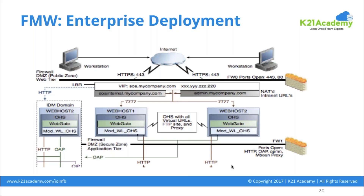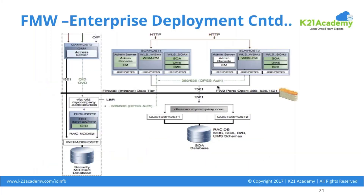You put a firewall in between and then you only allow HTTP ports, Oracle Access Protocol port, OPMN port, or MBean (management bean proxy) port. Then you have the middle tier — the application tier — which has host one, host two, SOA host one, SOA host two. There is an admin server, and it has a first managed server and a second managed server.